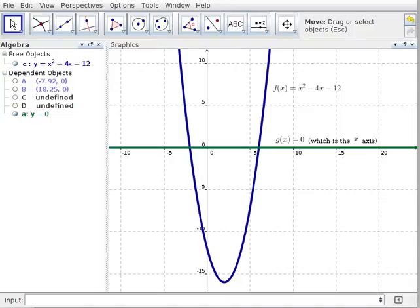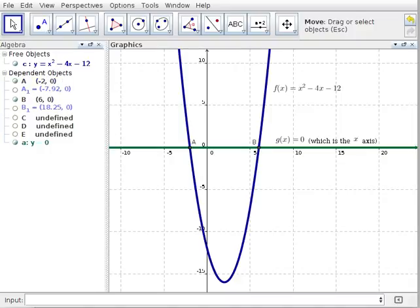Here we've graphed f(x) = x² - 4x - 12. Of course, g(x) = 0 is in fact just the x-axis. Now these two functions intersect at the points A and B. It's clear from the graph that x² - 4x - 12 is less than 0 between those points A and B.